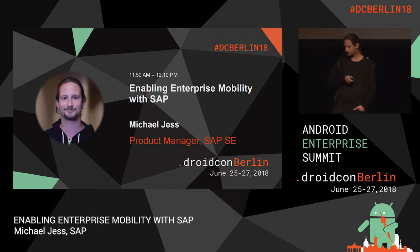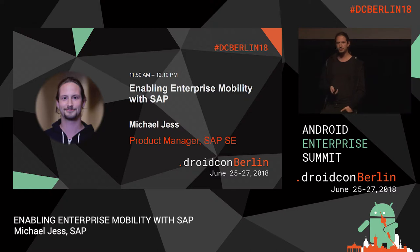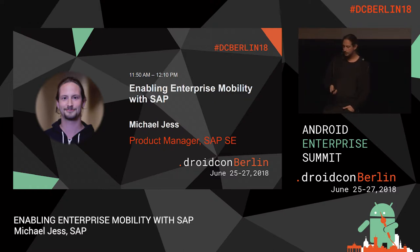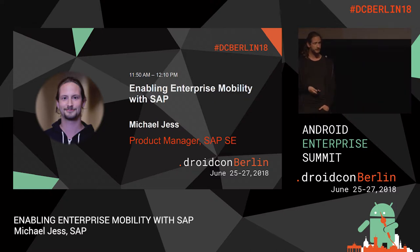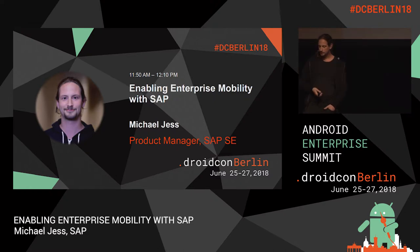Where do we find mobile in this whole picture? Clearly one common use case is field services — the salesperson is very likely to have an app to present products to customers. Another key area is the warehouse, where people are running around. Traditionally, especially in warehouses, we find ruggedized devices. Zebra is also here at DroidCon, delivering Android ruggedized devices commonly found in this area.